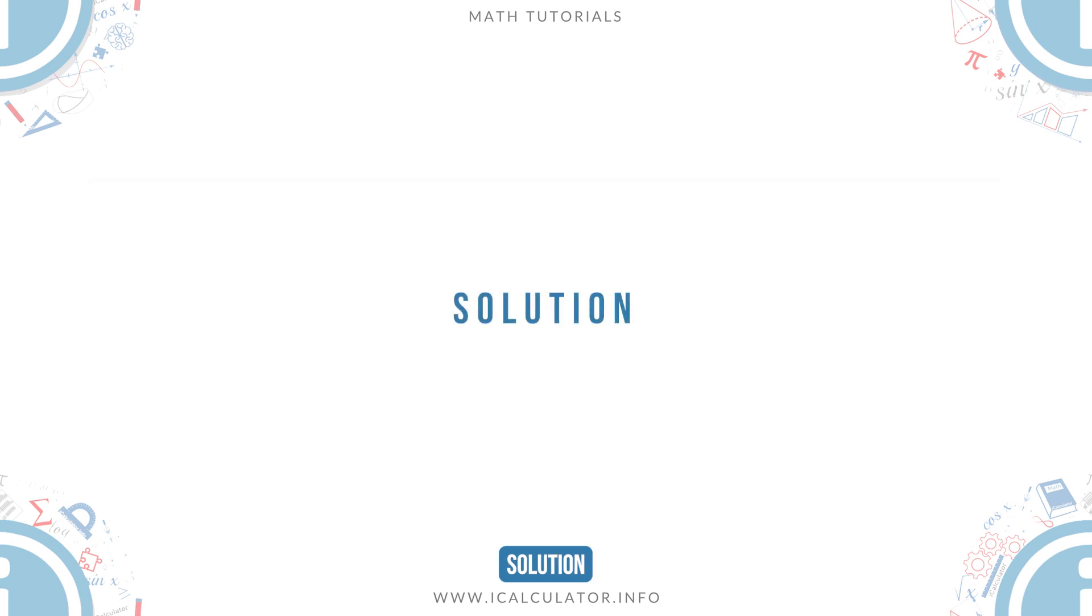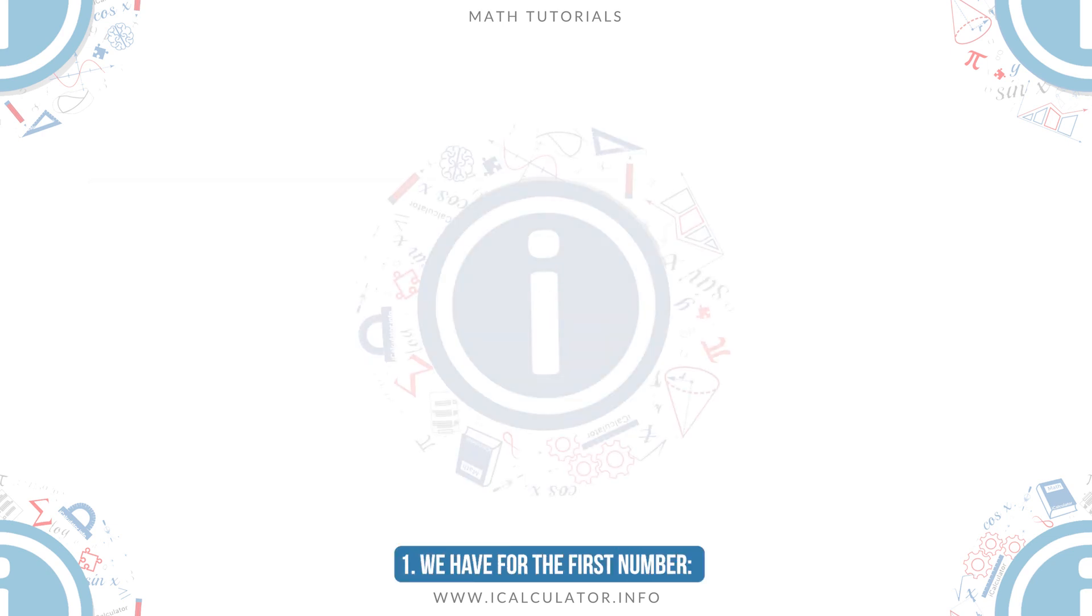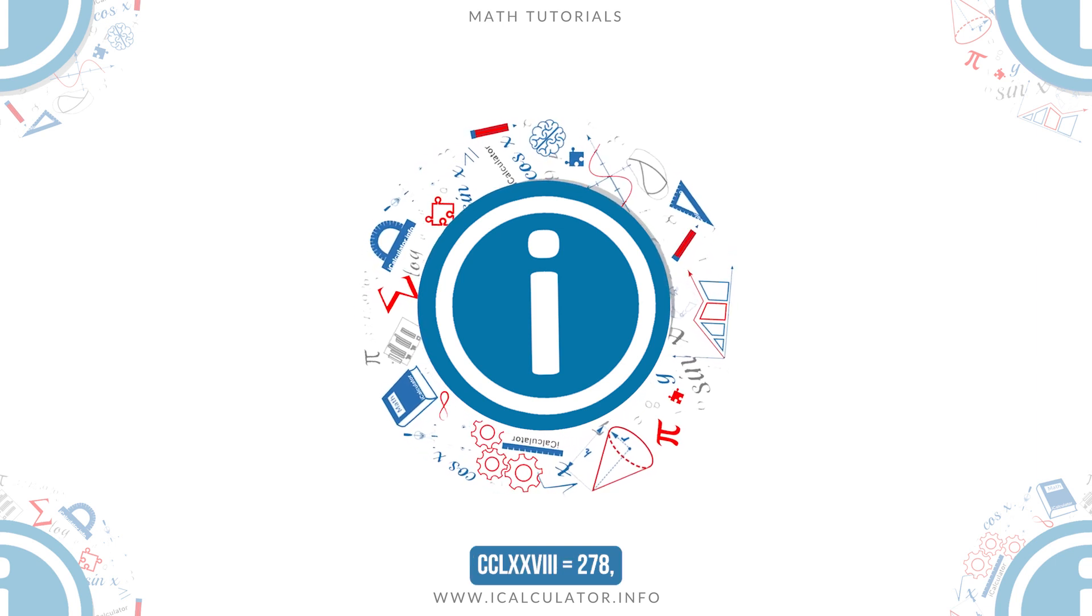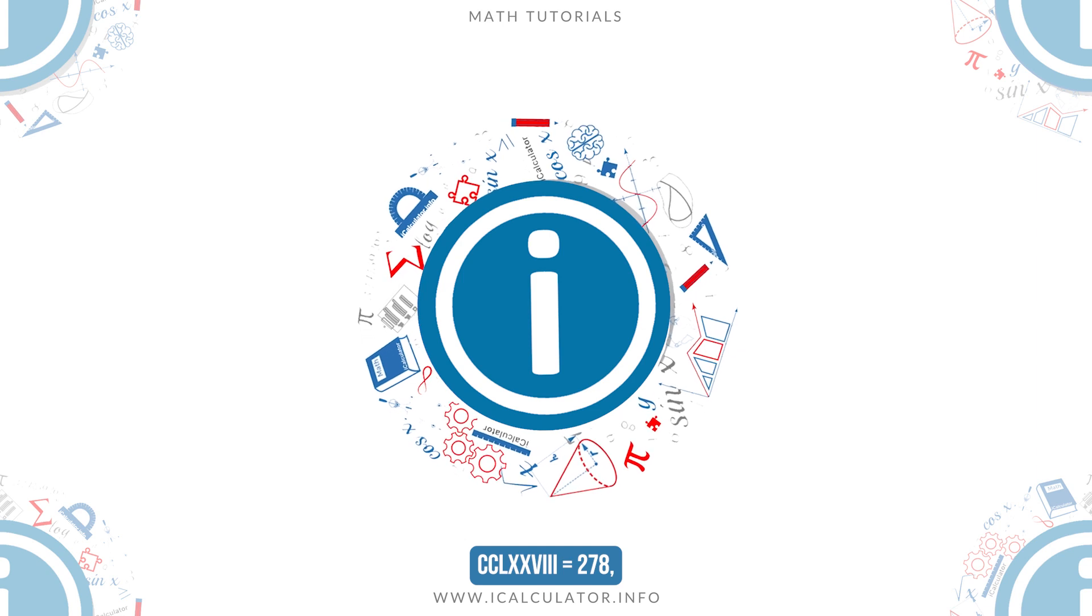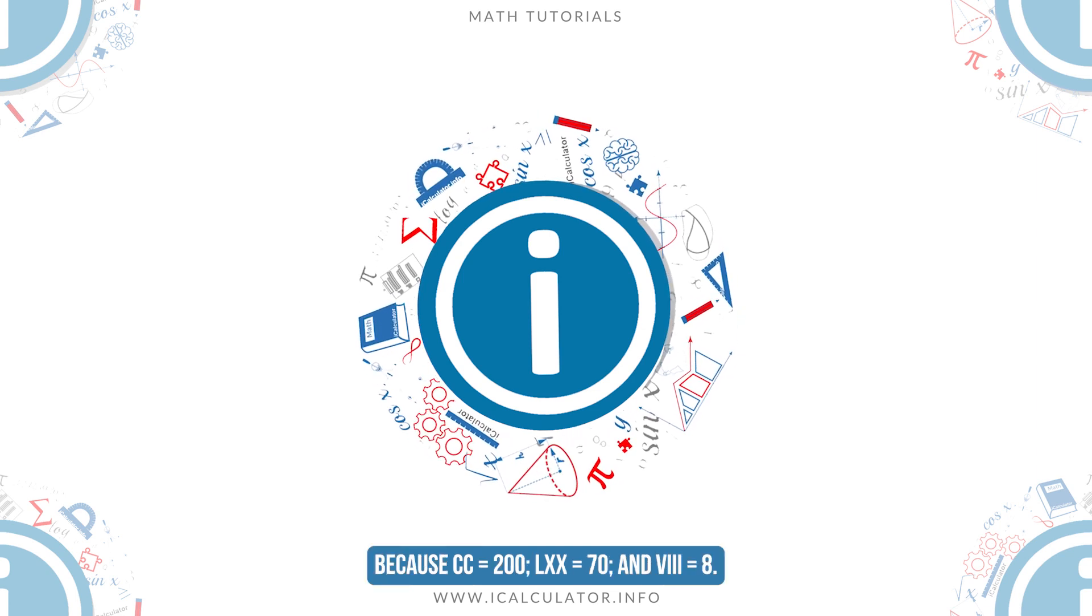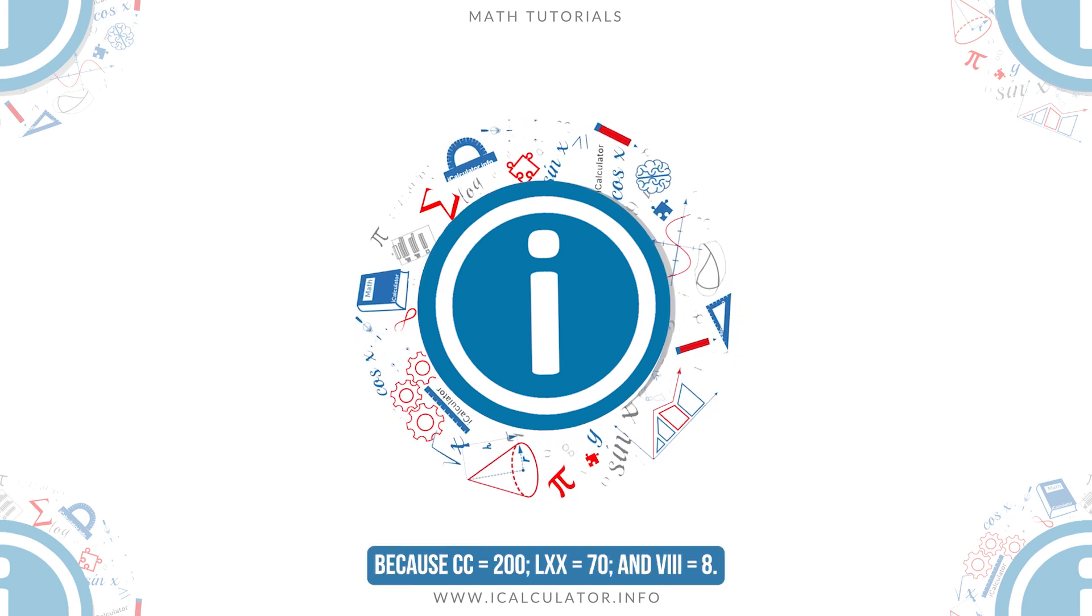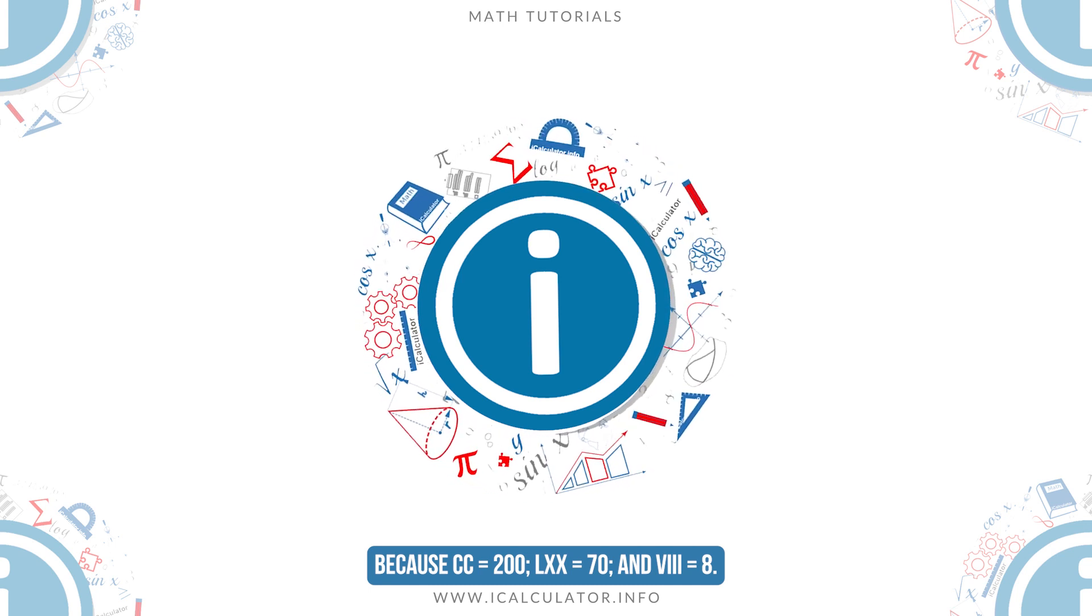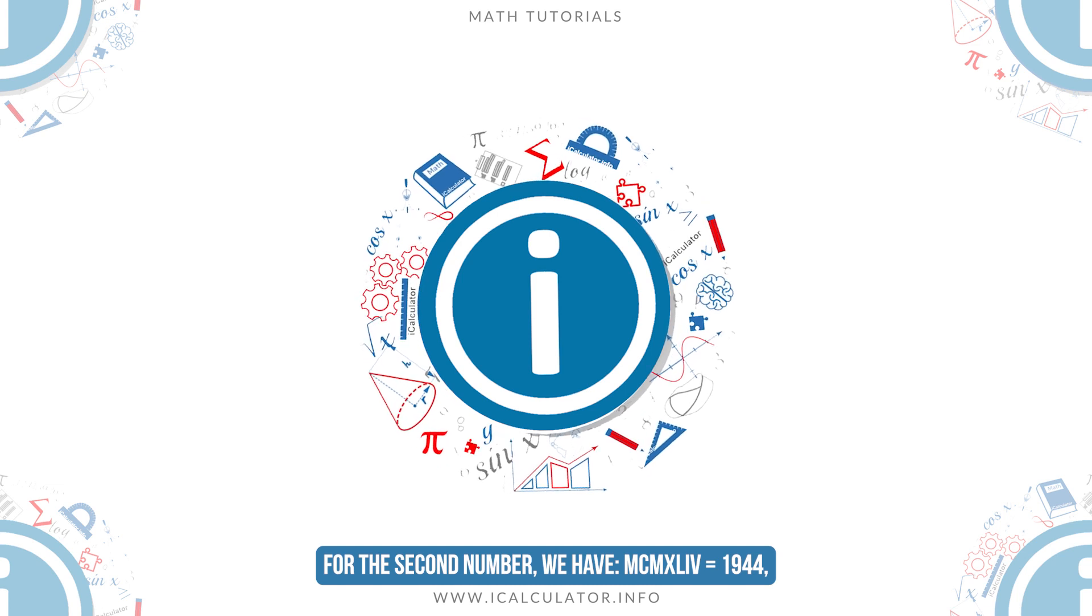Solution. 1. We have for the first number, CCLXXVI equals 276, because CC equals 200, LXX equals 70, and VIII equals 8. For the second number we have MCMXLIV equals 1,944.